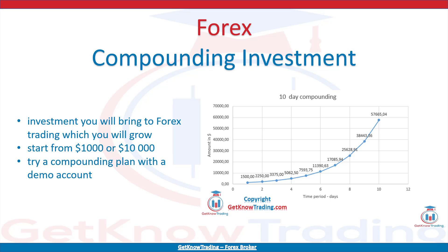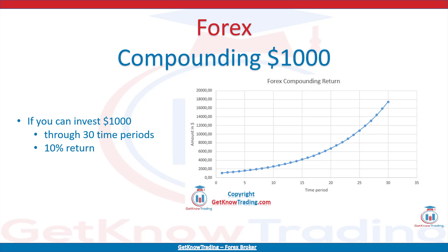If you can invest $1,000, you can check what you could expect to make after a certain period. Here is a graph where I have put a $1,000 investment through 30 time periods. The return on $1,000 is calculated with the compounding calculator and I have used a 10% return.